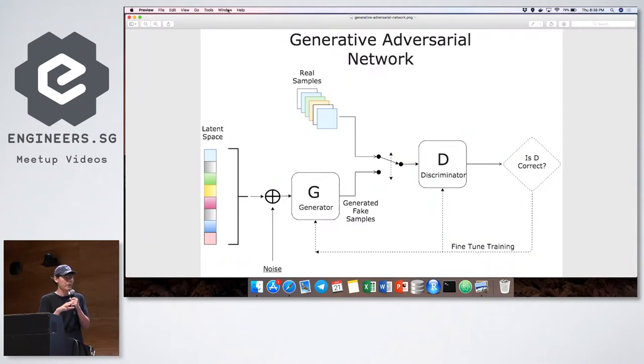The discriminator network aims to discriminate generated images coming out from the generator network and actual training data. So its goal is quite simple: is this a generated image or not? If it is, output one or a probability close to one; if not, output a probability close to zero.